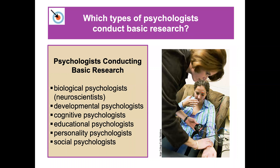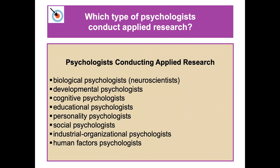Which types of psychologists conduct basic research? Psychologists conducting basic research are often biological psychologists or neuroscientists, developmental psychologists, cognitive, educational, personality, and social psychologists. There is definitely overlap between those conducting basic and applied research, but in general these types are more likely to conduct basic research. You can also have IO psychologists and human factors psychologists doing more applied research.